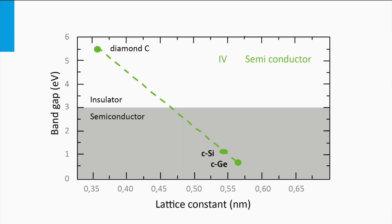In the next graph we plot the band gap of crystalline carbon, silicon, and germanium versus the lattice constant. Crystalline carbon is another name for diamond. We indeed see that the band gap is very large for diamond, as diamond has the smallest lattice constant. In a simplified representation, a larger band gap corresponds to a larger overlap of the original sp3-like orbitals of the neighboring atoms. A larger overlap induces a larger splitting of the energy levels between the bonding and antibonding levels.